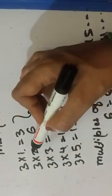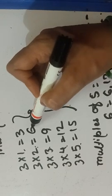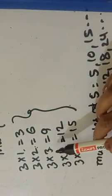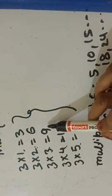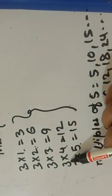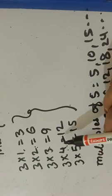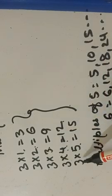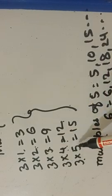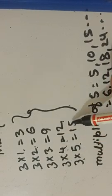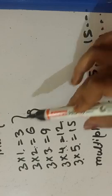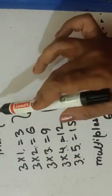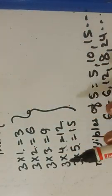So, 3 multiplied by 1 is 3. 3 multiplied by 2 is 6. 3 multiplied by 3 is 9. 3 multiplied by 4 is 12. And 3 multiplied by 5 is 15. So these are the multiples of 3.